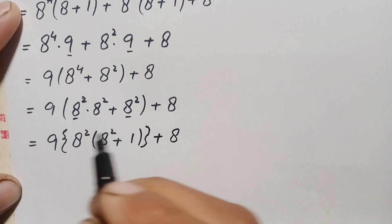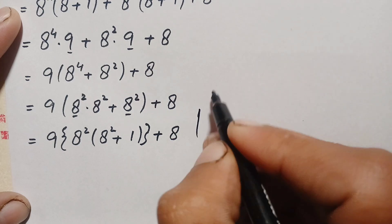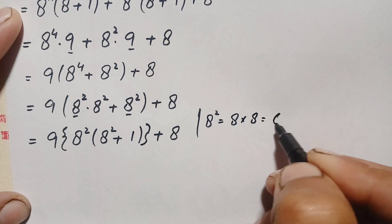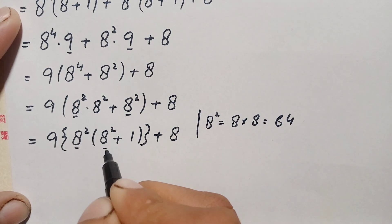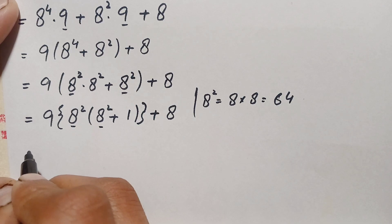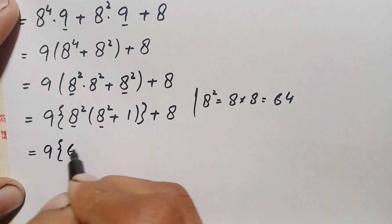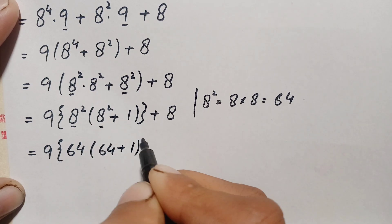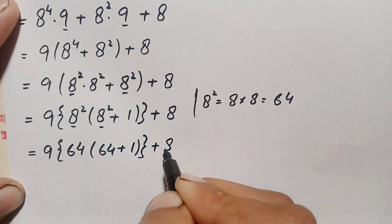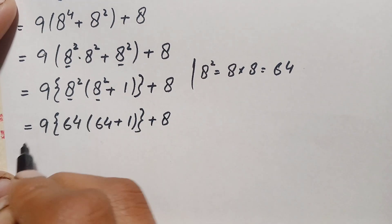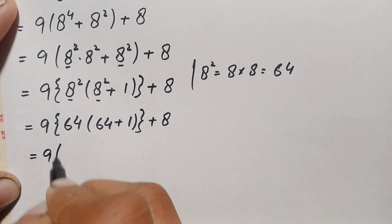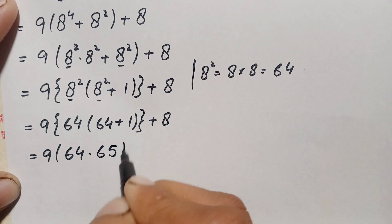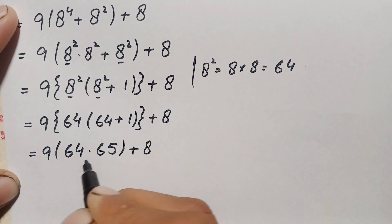The value of a squared is 64, because 8 times 8 is 64. We replace a squared with 64, so the expression becomes 9 times 64 times the quantity 64 plus 1, plus a. Simplifying inside: 64 plus 1 is 65, giving us 9 times 64 times 65, plus a.